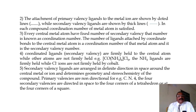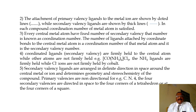Fourth postulate: coordinated ligands of secondary valency are firmly held to the central atom while other atoms are not firmly held. For example, in Co(NH3)6Cl3, the NH3 ligands are firmly held while Cl⁻ ions are not firmly held by cobalt. Fifth postulate: secondary valency ligands are arranged in a definite direction in space around the central atom or ion, which determines the geometry and stoichiometry of the compound. Primary valencies are non-directional.